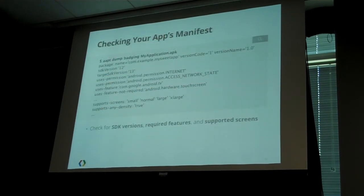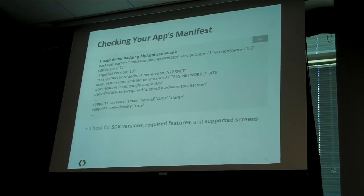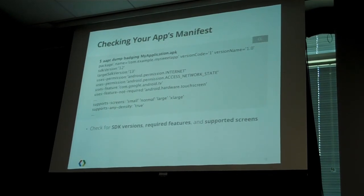Between screen filters, feature filters, and API levels or SDK versions, you can double-check this before you release your application to market. There's a cool tool called AAPT — if you run AAPT Dump Badge on your APK, it'll show you what the market knows about your app based on what's in the manifest. You can check that the SDK levels check out because Google TV supports SDK level 12 or 13, you're only using valid permissions that don't cause implicit features, the common Google Android TV feature is used, and that the hardware touchscreen feature is made not required — which is really, really important. If you want your app on Google TV devices, you must say that feature is not required explicitly in your APK.